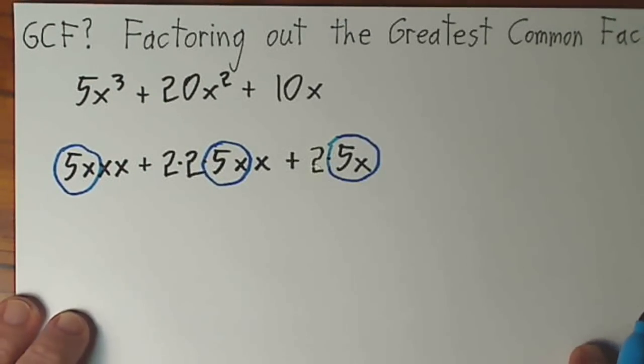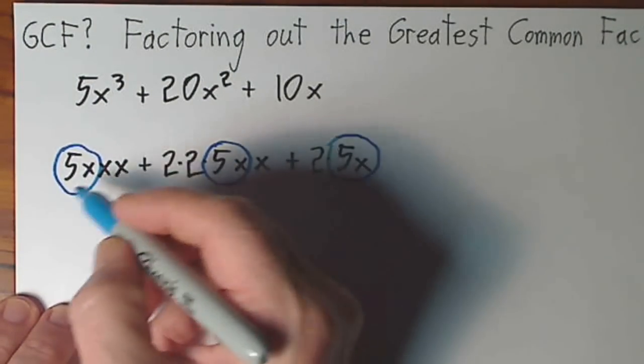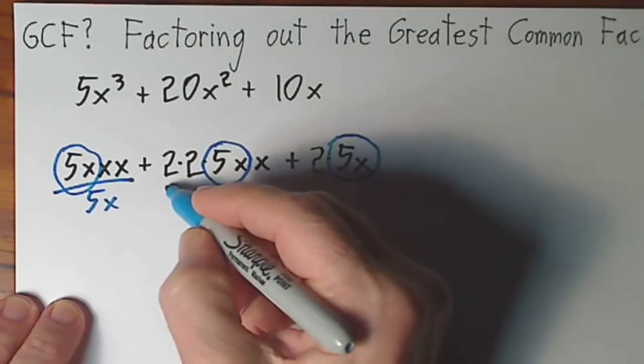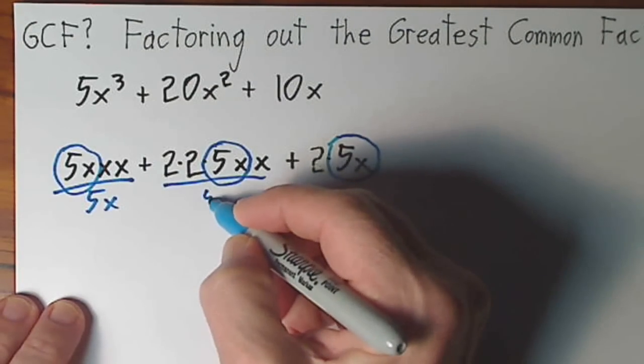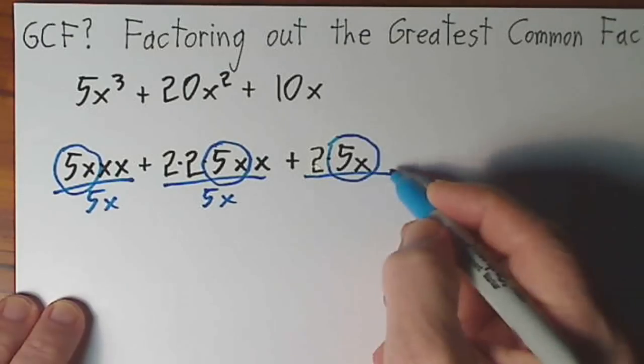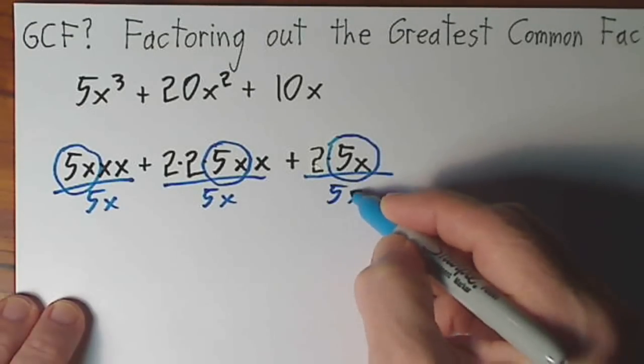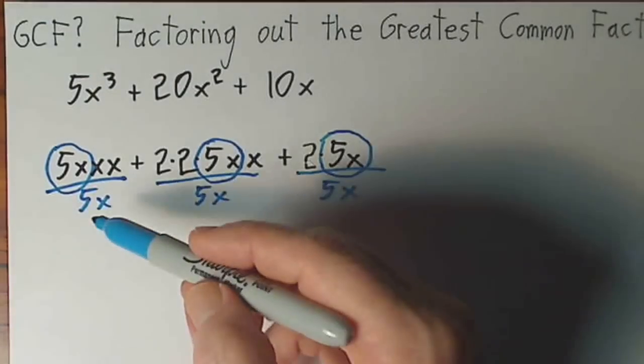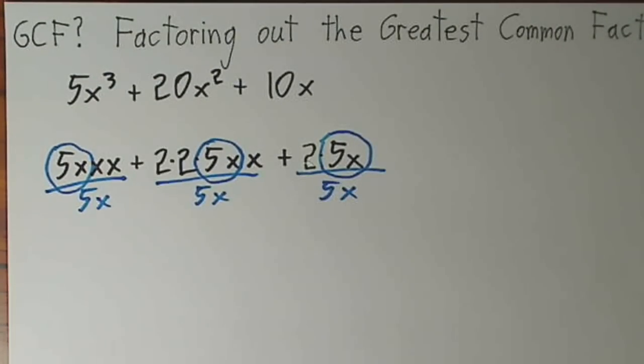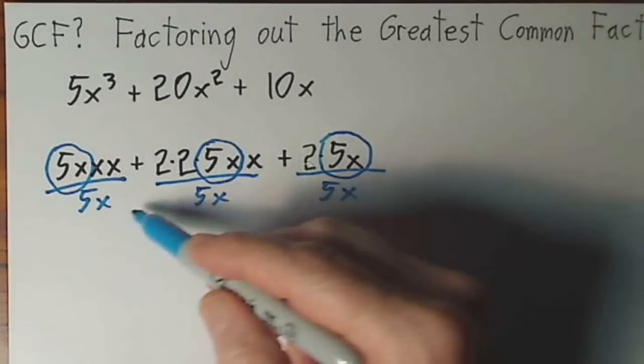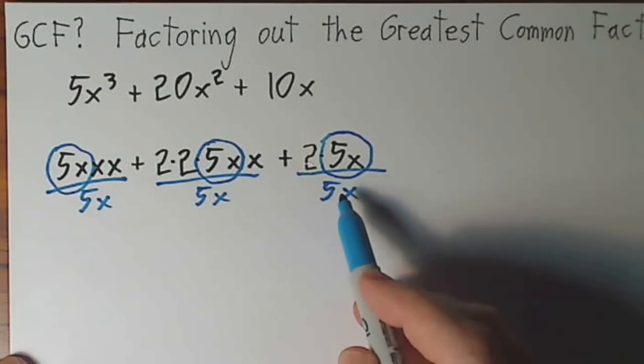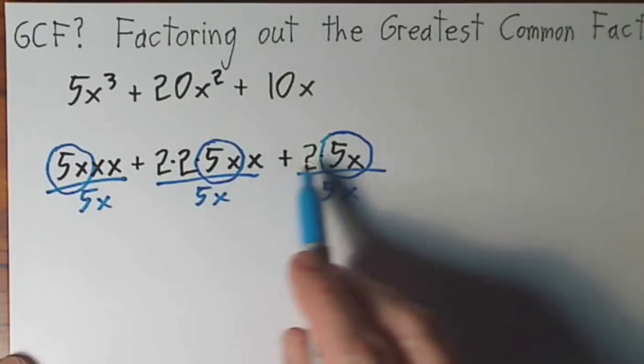So if I say I'm going to factor it out, that really means I'm going to divide out 5x, divide out 5x, and divide out 5x. But in mathematics, you're never allowed to just walk up and divide and change the value of something. So I want to divide this out but preserve the value.